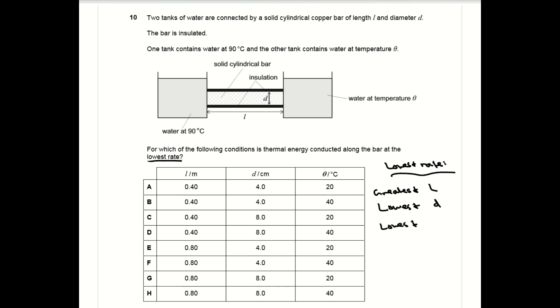The constraint on L, the distance between the beakers, automatically rules out A to D. And you want d to be as small as possible, which means you're only left with E and F. If you calculate the difference in temperatures between the beakers for both E and F, you end up with your answer as F.